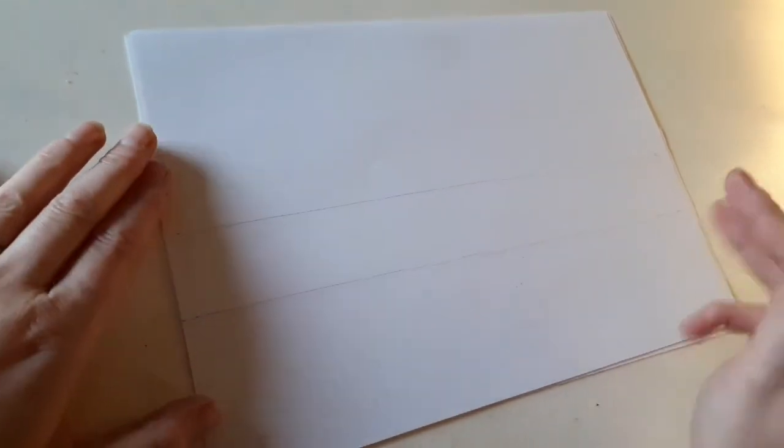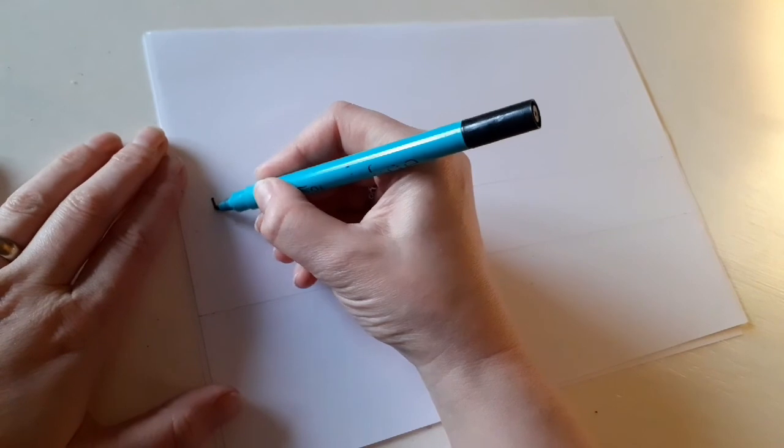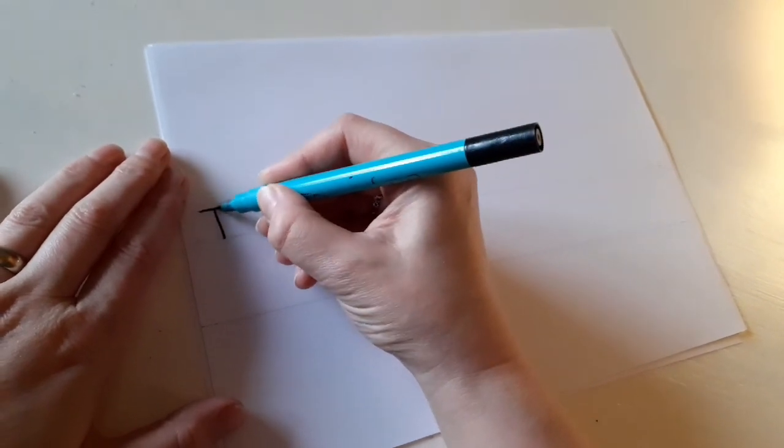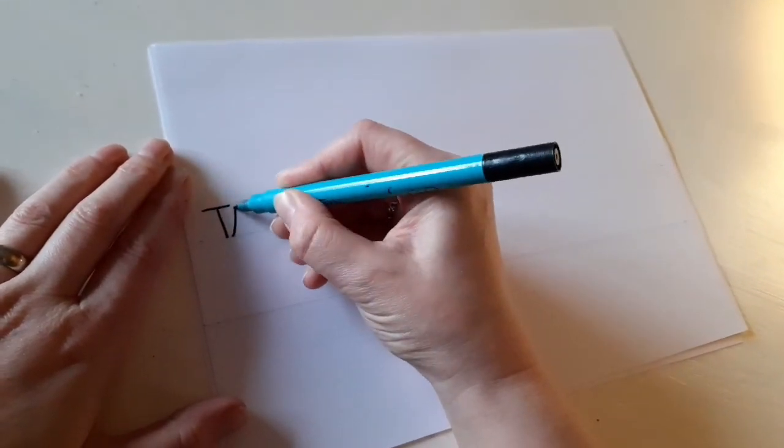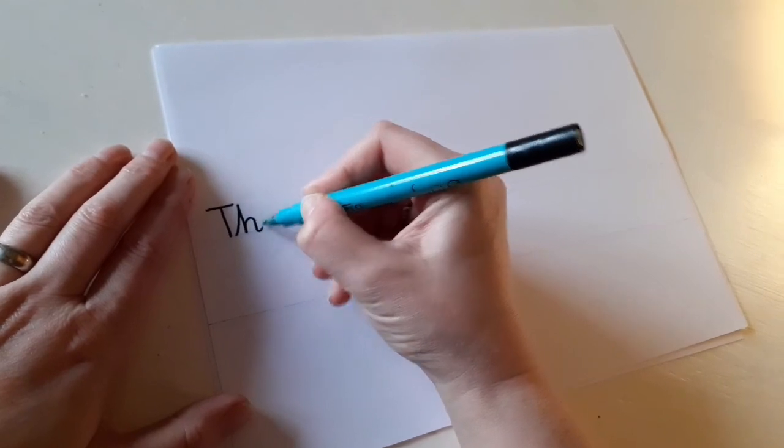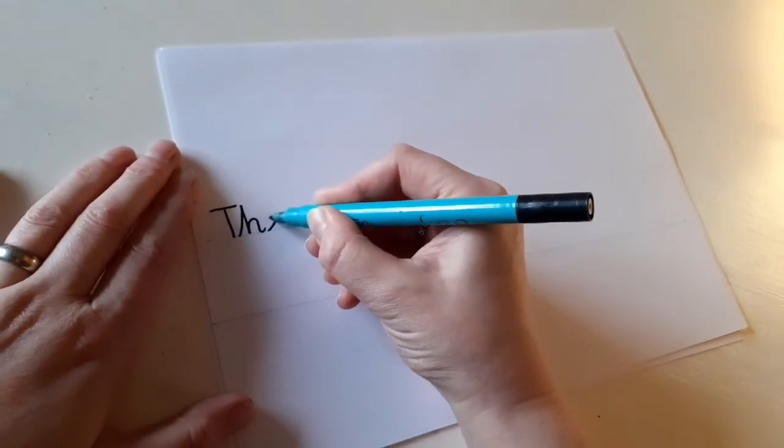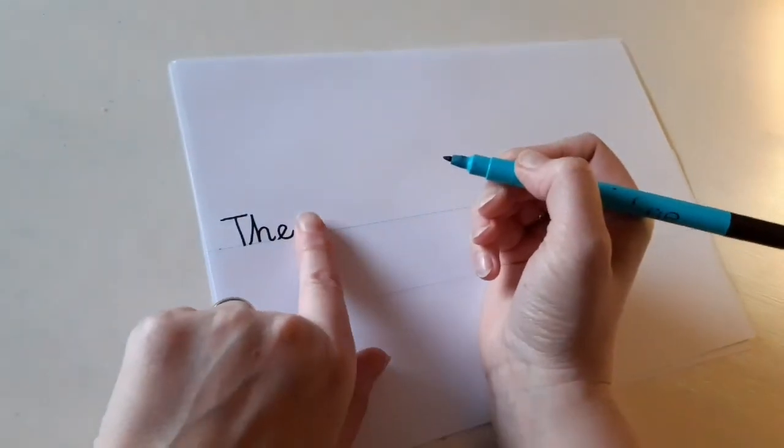So we're going to start with 'the' again, and we always start with a capital because it's a sentence. The. Remember, t-h makes that th sound that we practice in phonics. And then we have an e on the end. The. Finger space.